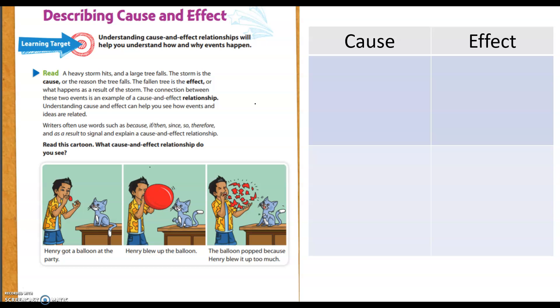Understanding cause and effect relationships will help you understand how and why events happen. A heavy storm hits and a large tree falls. The storm is the cause or the reason the tree falls. The fallen tree is the effect or what happens as a result of the storm.